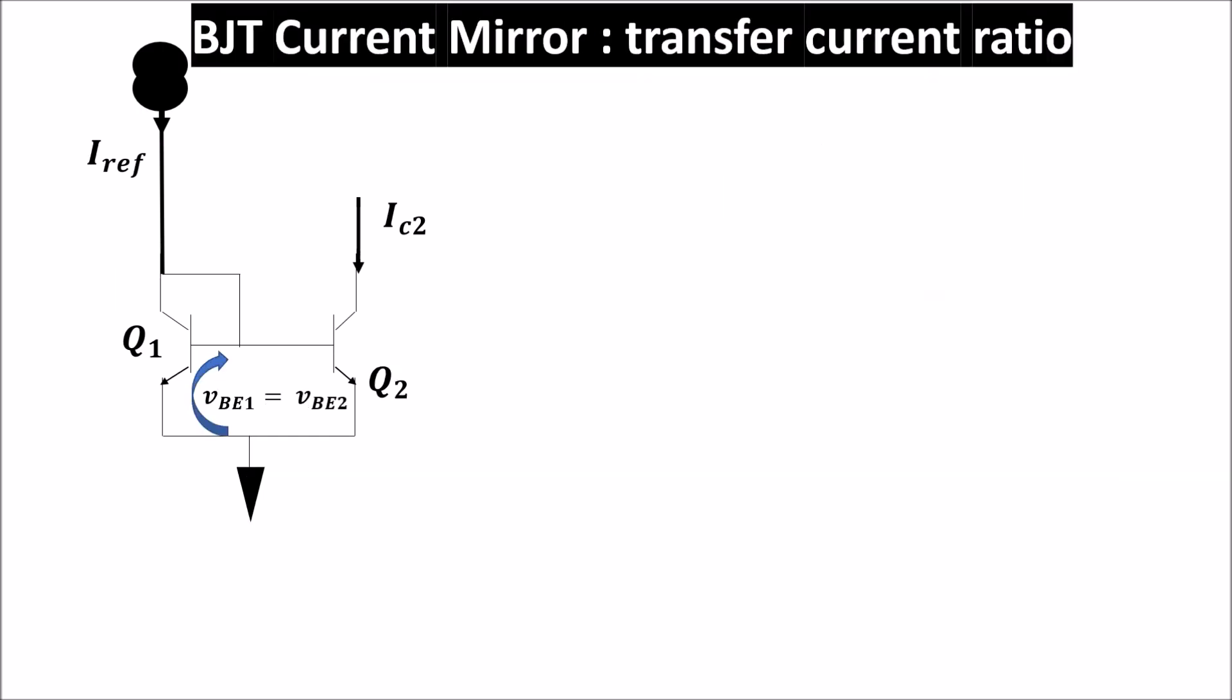Now we consider that even if the two transistors are matched the mirrored current IC2 cannot be exactly equal to Iref because of the base current of the BJTs. Let's say that IB1 is the base current of Q1 and IB2 is the base current of Q2 and because the transistors are matched IB1 is equal to IB2 is equal to IB.